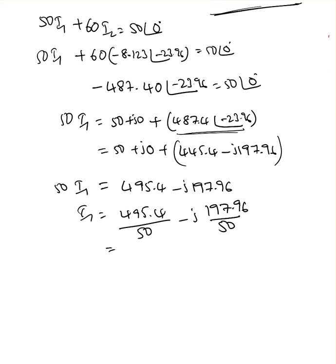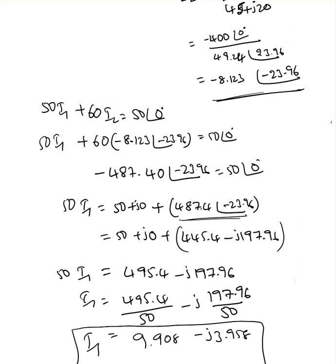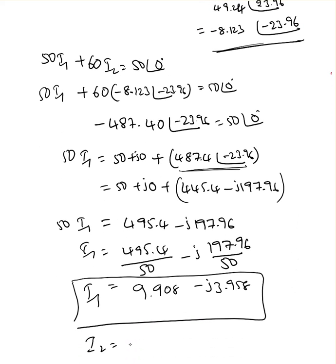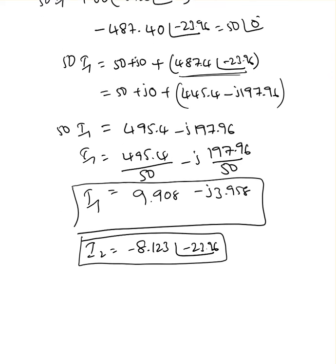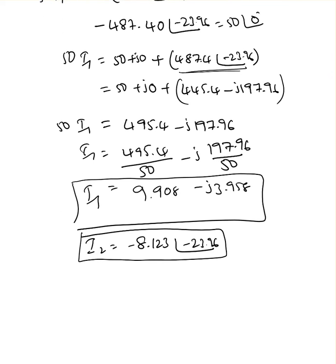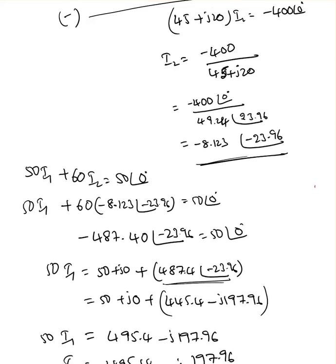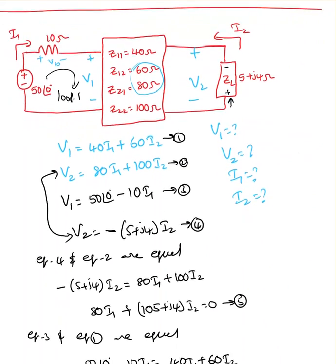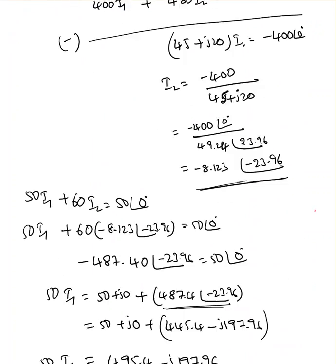After solving, i1 = 9.908 − j3.958 and i2 = −8.123∠−23.96°. It's a good idea to convert both into the same format. Converting i1 into polar format gives i1 = 10.66∠−21.77°. So we found i1 and i2 as requested. He gave us the z-parameters and other elements connected outside the black box, and we successfully found i1 and i2.